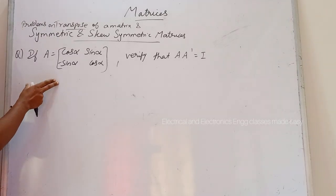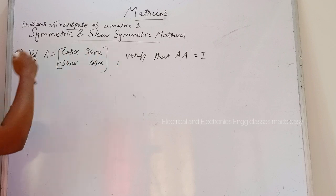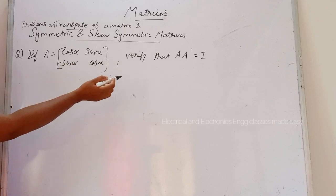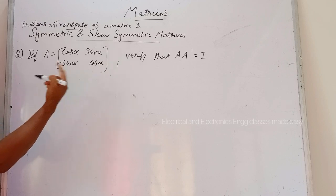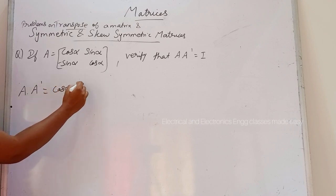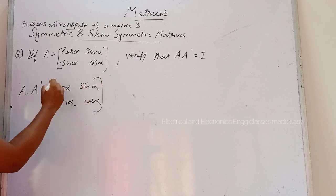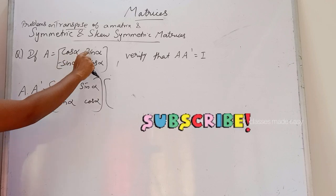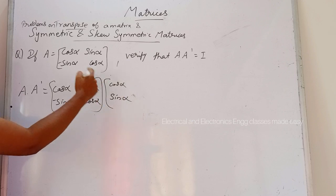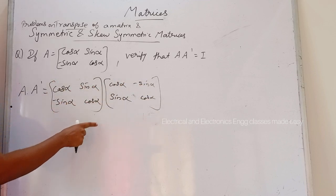Next question: if A equals the matrix [cos α, sin α; -sin α, cos α], verify that A into A transpose equals I, the identity matrix. To verify, we write A multiplied by A transpose. A transpose is obtained by writing rows as columns, giving [cos α, -sin α; sin α, cos α].